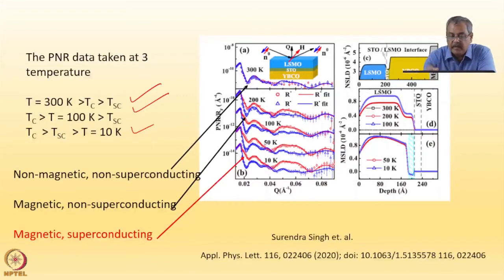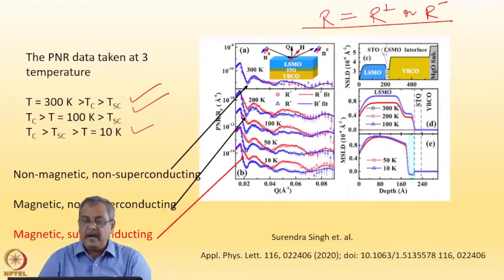You can see here, the plus is shown as red and the minus is shown as blue. There is no difference between the two because when it is not magnetic, then R equals R plus or R minus. They are the same, and that is exactly what you find at 300 K room temperature.